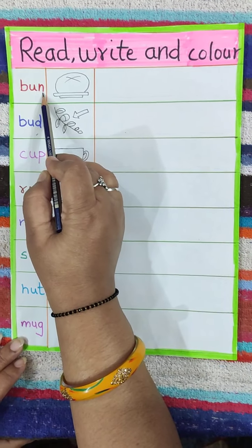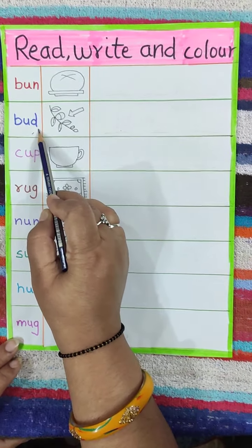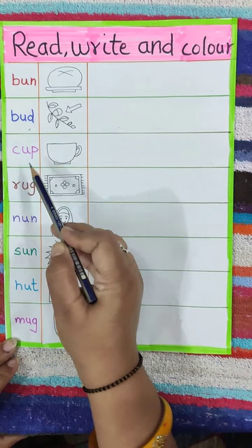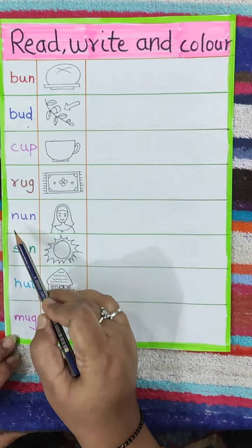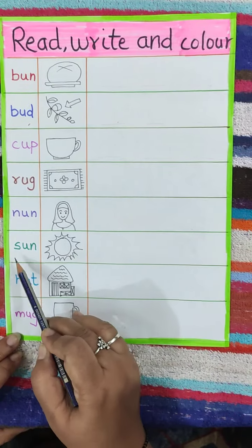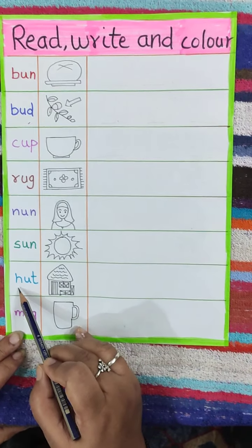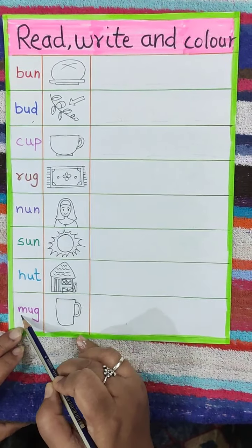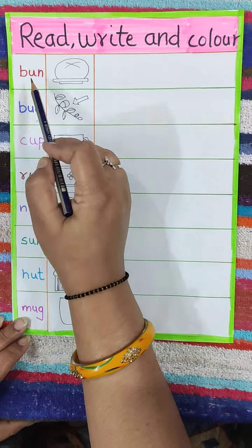Now, B, U, N — bun. B, U, D — bud. C, U, P — cup. R, U, G — rug. N, U, N — none. S, U, N — sun. H, U, T — hut. And M, U, G — mug.